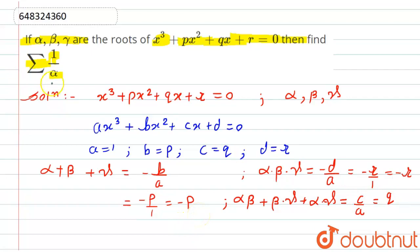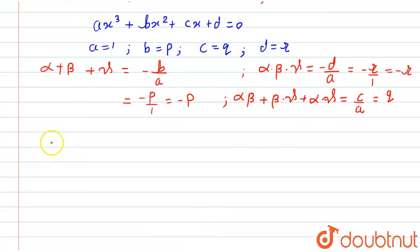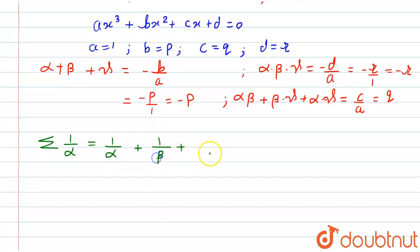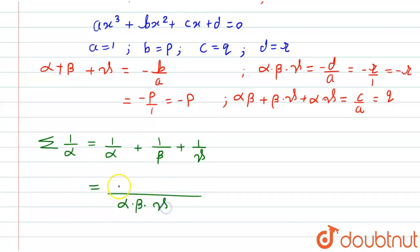We need these to find summation of 1 upon alpha. The summation of 1 upon alpha can be written as 1/alpha + 1/beta + 1/gamma. Taking alpha·beta·gamma as the common denominator, the numerator becomes beta·gamma + alpha·gamma + alpha·beta.